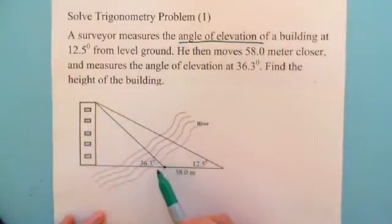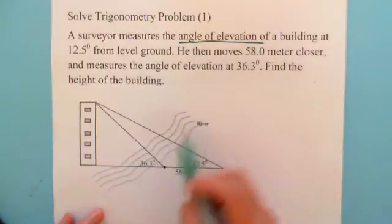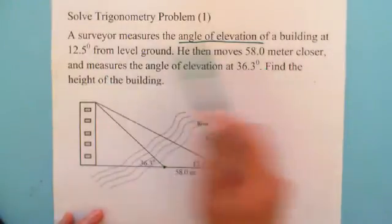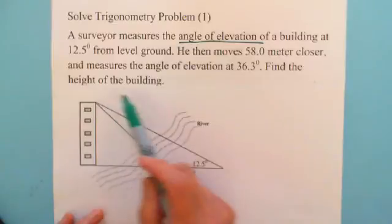He finds the angle of elevation becomes 36.3 degrees. So we have three pieces of information to find the height of the building.